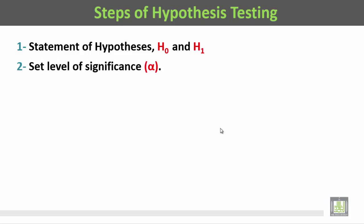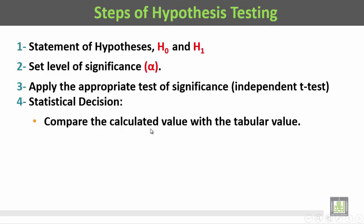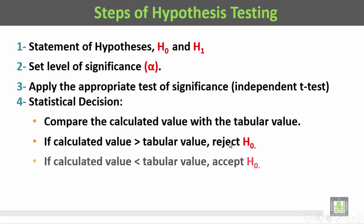That's to say, statement of the hypothesis H0 and H1, then we set the level of significance alpha, then we apply the appropriate test of significance, in this case it's the independent t-test, and lastly the statistical decision by comparing the calculated value with the tabular value. If the calculated value is more than the tabular value we reject H0. If the calculated value is less than the tabular value we accept H0.